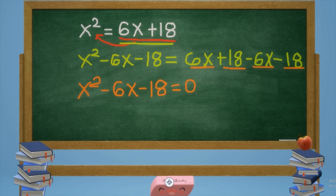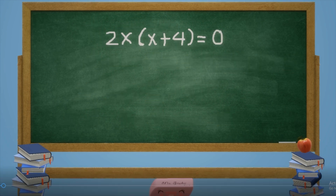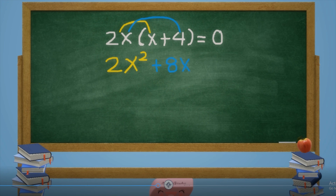The value of a equals 1, b equals negative 6, and c is equal to negative 18. For the next example, multiply 2x times x plus 4: 2x times x is 2x squared, and 2x times 4 is 8x, equals 0. So 2x squared plus 8x equals 0. This is now in standard form. The value of a is 2, b is equal to 8, and c is equal to 0.